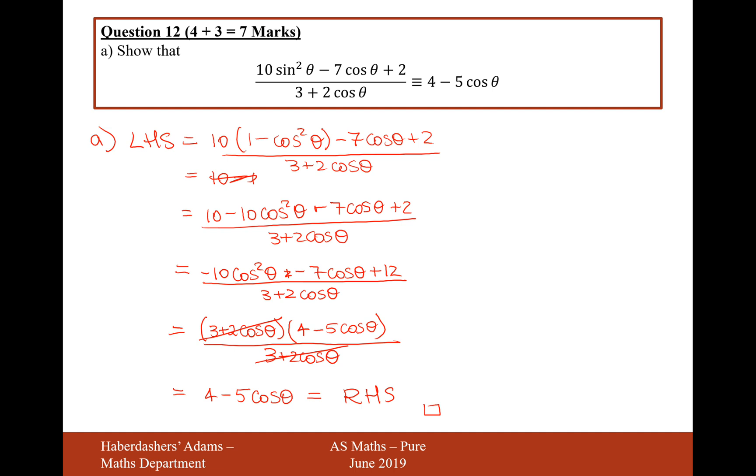We have shown part A, which is a 4 marker. Make sure you don't move something from one side onto the other, so you are not allowed to times by 3 plus 2 cos theta onto the other side. You have to go through just working on the left-hand side, factorising. Use the right-hand side as an educated guess as to what you're going towards. It looks like things will cancel out. So use that fact inside your workings, but don't ever move something to the other side.